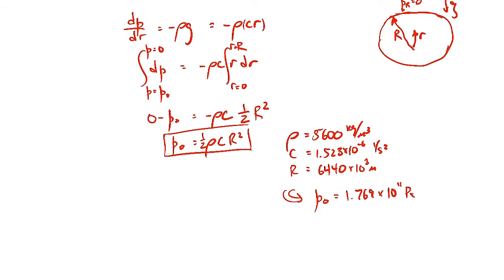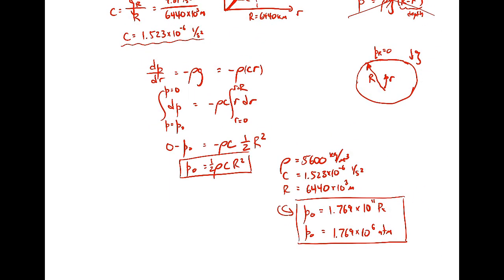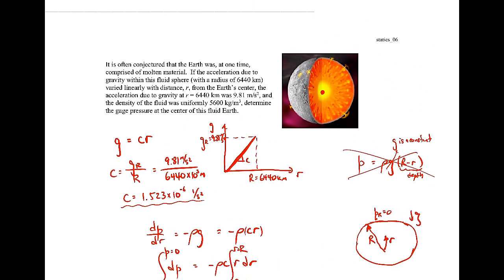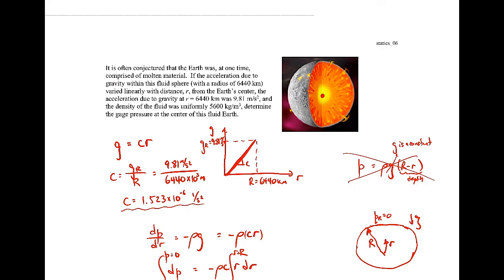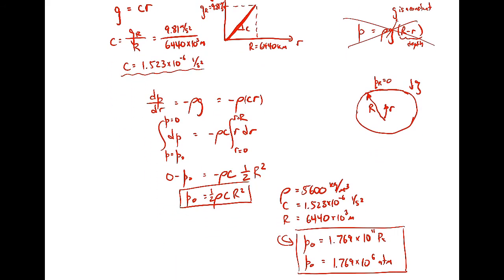Or let's just put it in terms of atmospheres. It's 1.769 times 10 to the 6th atmospheres. It's a huge number. Almost 2 million atmospheres at the center of this liquid earth. So just an enormous pressure. You can imagine that it would certainly be very hot here because of the enormous pressures acting on it.